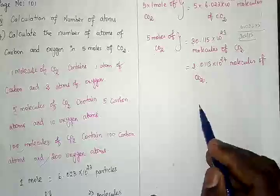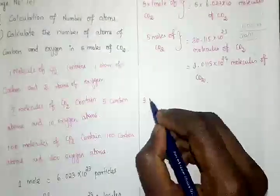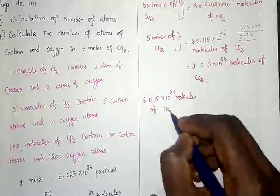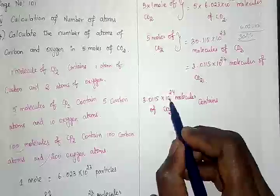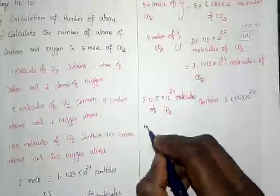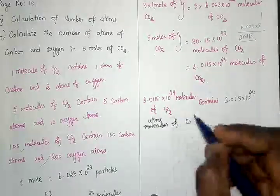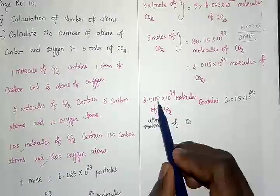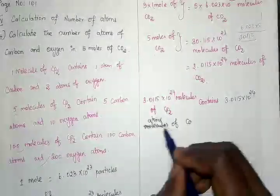Now, how do we calculate the number of carbon atoms and oxygen atoms? Just as 100 molecules contained 100 × 1 carbon atoms, here we multiply 3.0115 × 10²⁴ molecules by one carbon per molecule, which gives 3.0115 × 10²⁴ atoms of carbon.